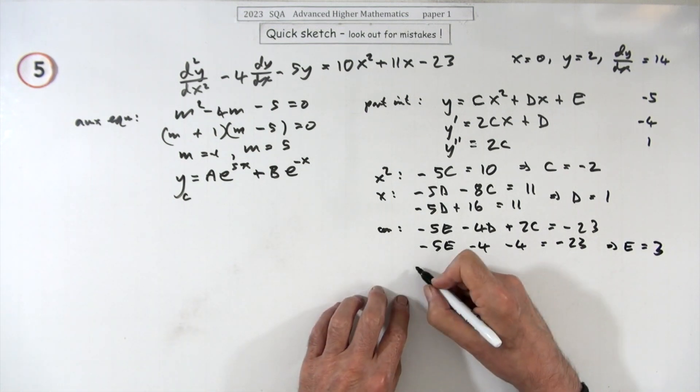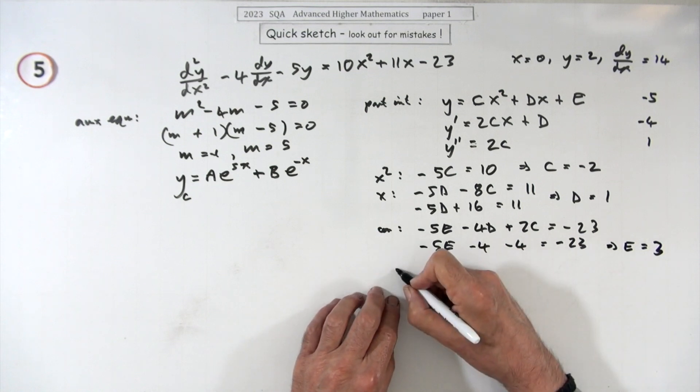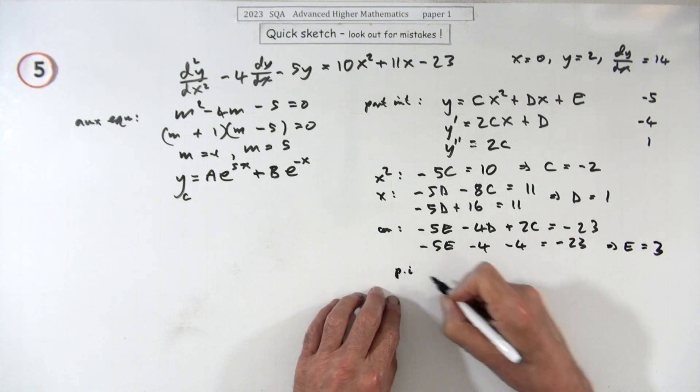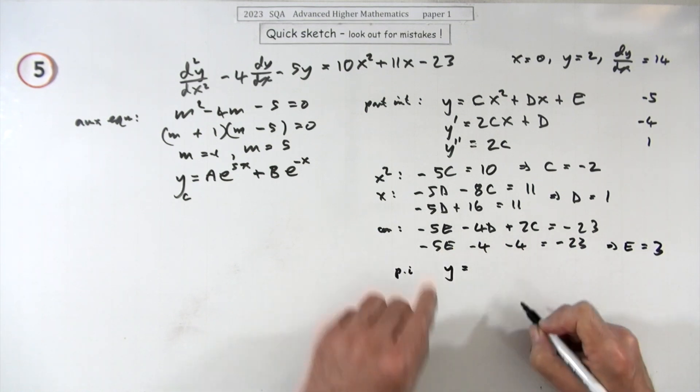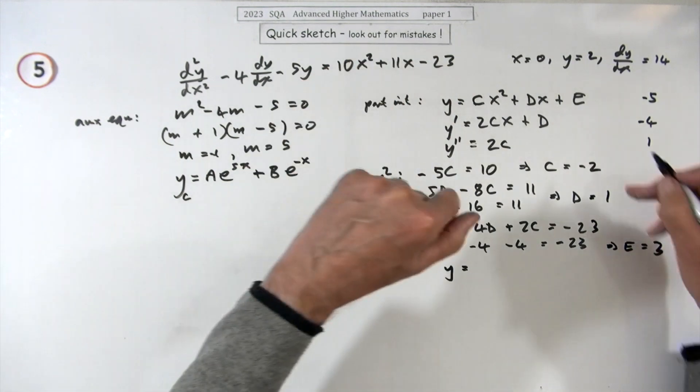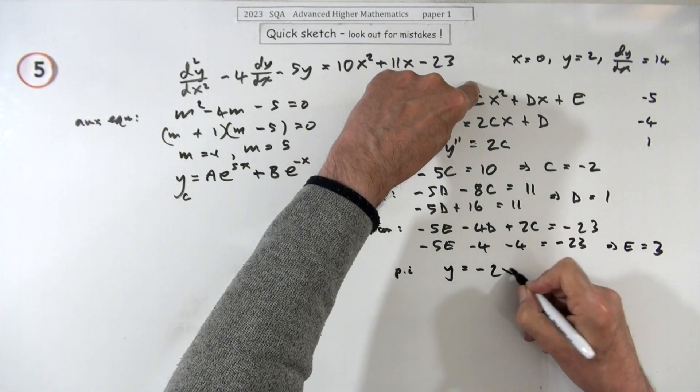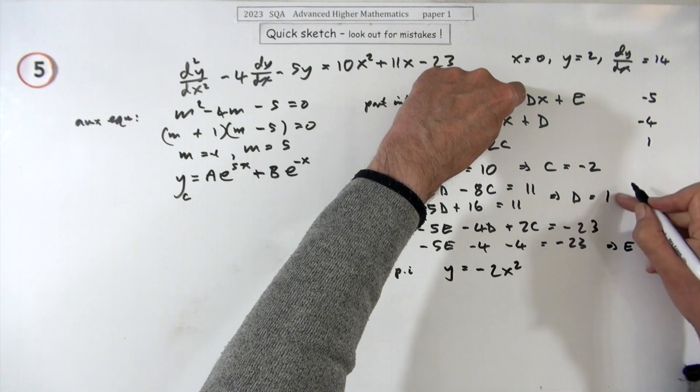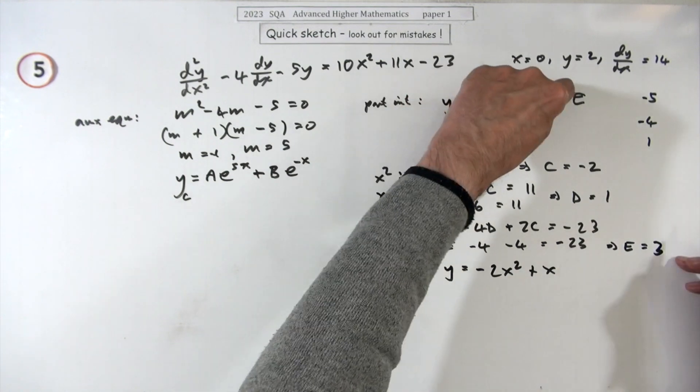I'm going to work over on this bit, so now the particular integral. For the particular integral I've got y is equal to, where were they all again, let's place them, negative 2x squared plus x plus 3.